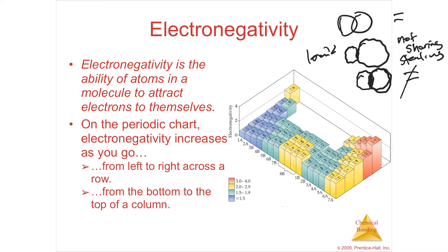So if you're sharing electrons, you're either going to share them equally or unequally, and that's what we're talking about today. Electronegativity is very similar — it's related to ionization energy. If you have a very low ionization energy, that means it's easy to steal an electron from you. If you have a very high ionization energy, it requires a tremendous amount of energy to steal an electron.